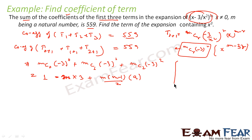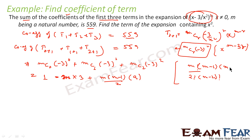Why is mC2 equal to m(m-1)/2? Because mC2 = m! / (2! · (m-2)!). We can write m! as m·(m-1)·(m-2)!, cancel (m-2)!, and since 2! = 2, we get mC2 = m(m-1)/2.